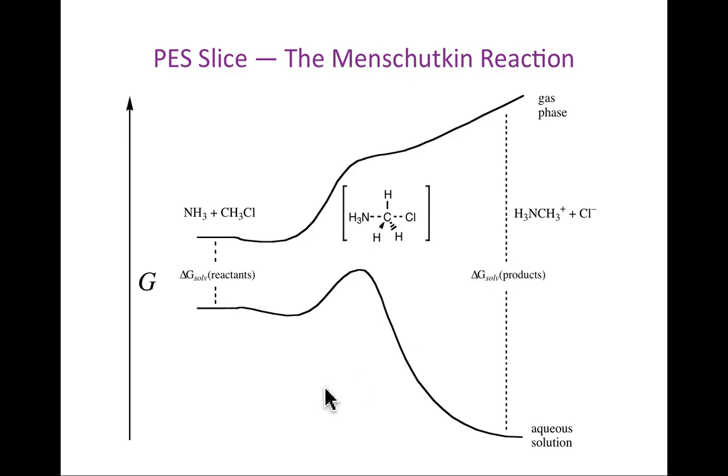And a specific example where maybe that would play a role is the Menshutkin reaction. So the Menshutkin reaction is the SN2 reaction of an alkyl halide with an amine. Normally it's actually substituted amines, but just for simplicity I'm going to illustrate here with ammonia. So we can imagine in the gas phase, ammonia, this upper curve is a gas phase curve, as indicated here, ammonia approaches chloromethane, there is a backside attack in a classic SN2 fashion, of the ammonia lone pair displacing chloride, and the products are methyl ammonium and the chloride anion.